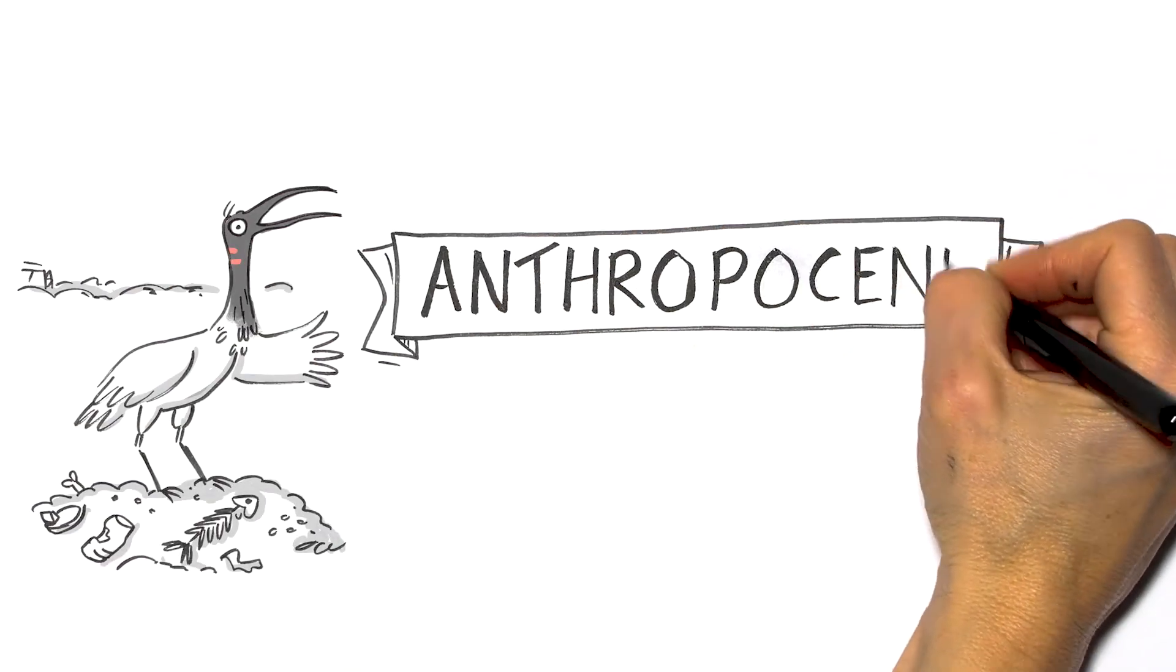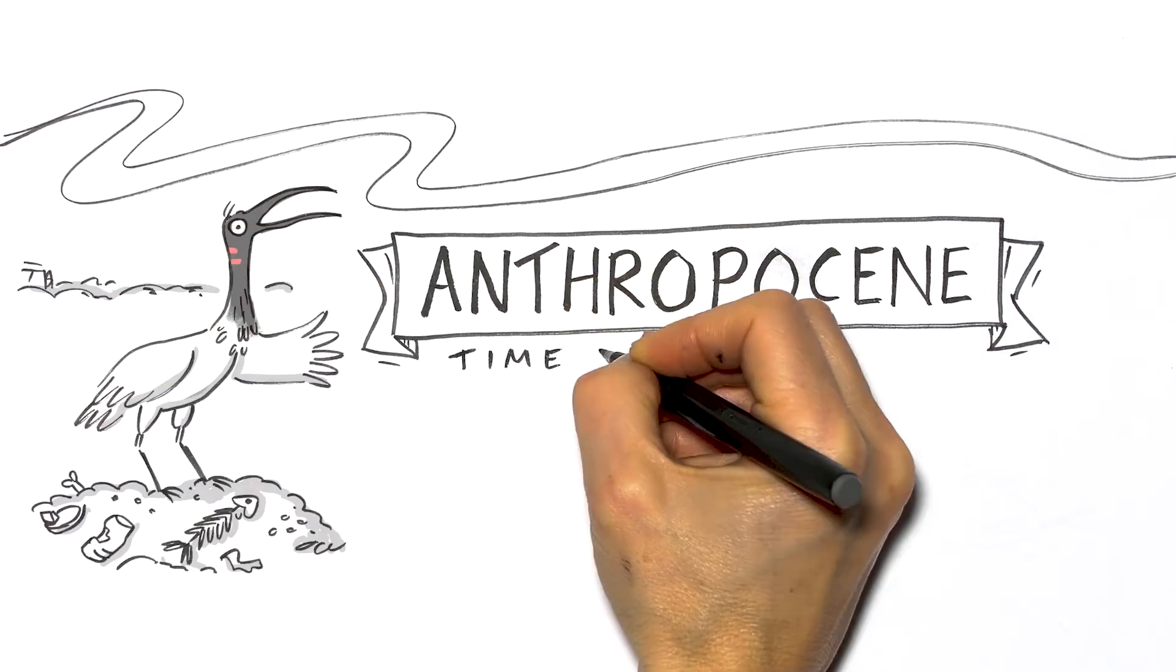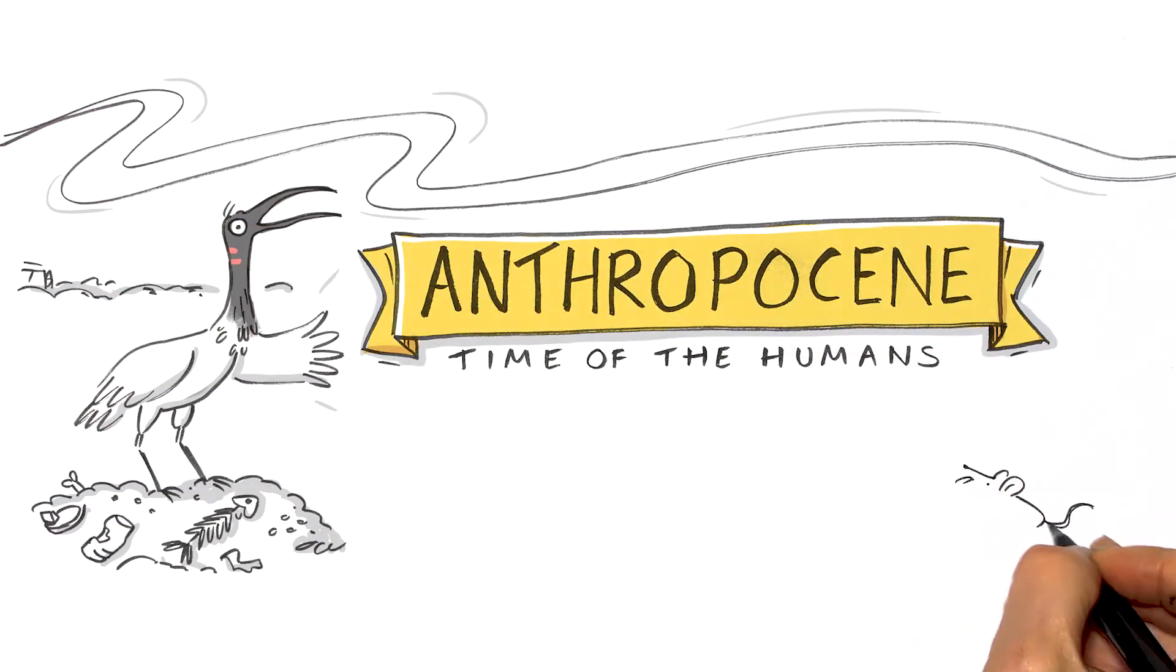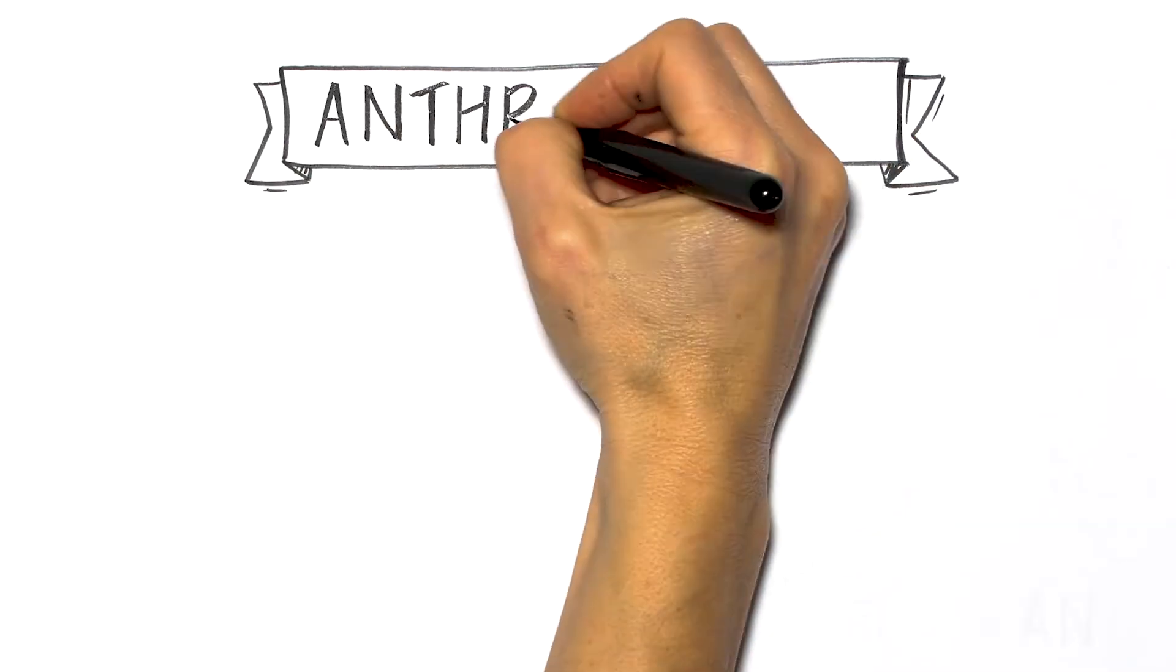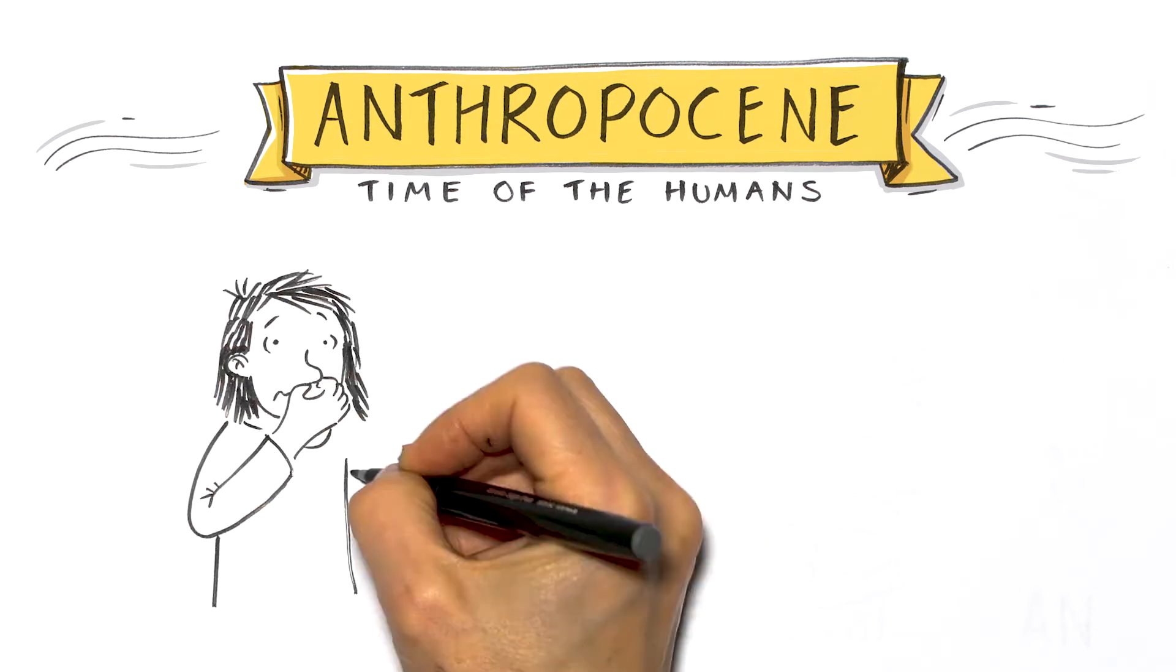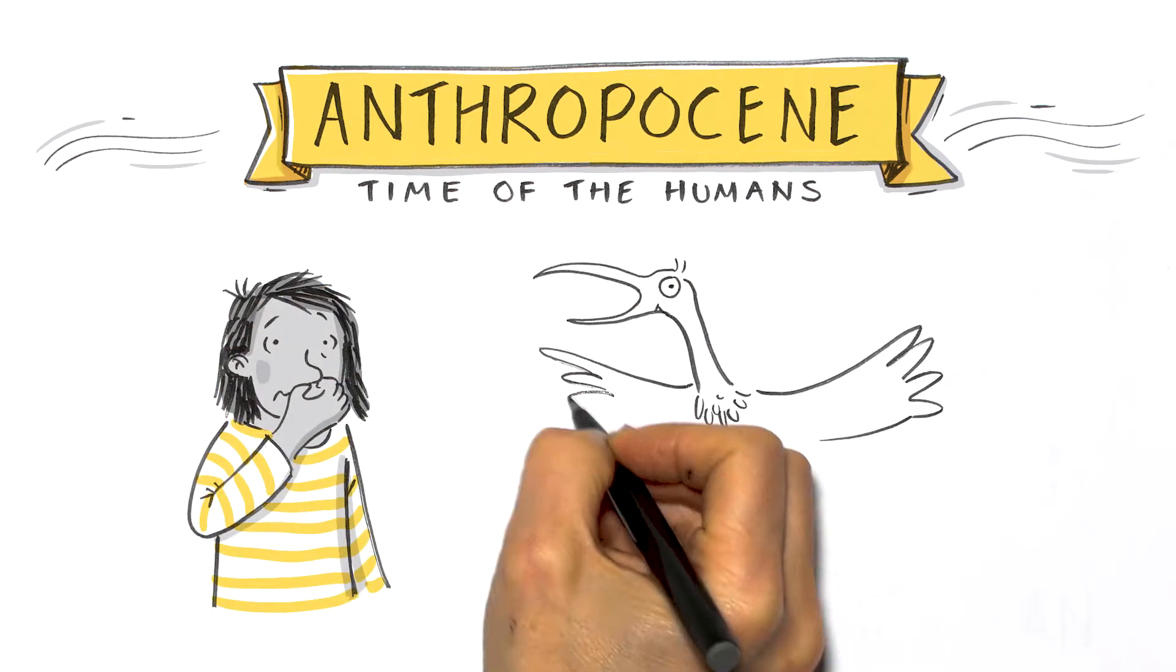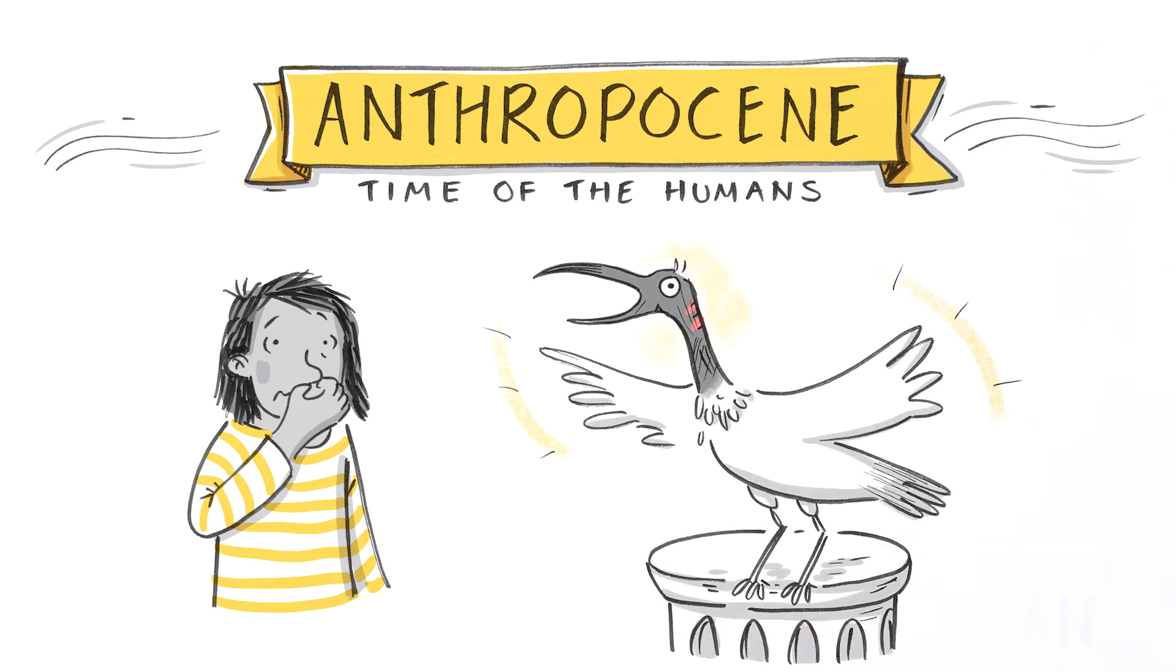They're calling it the Anthropocene. Anthropo means human. The Anthropocene is the time of the humans. You might be wondering why a time that smells like bin juice is being named after your species. And why a bird you've nicknamed the bin chicken is telling you about it. Yeah, that's right. We know what you've been saying about us.